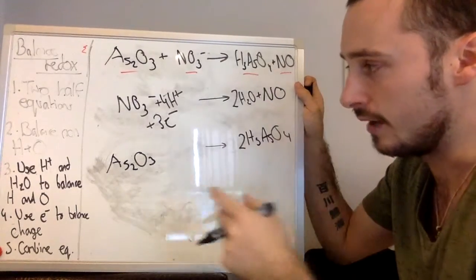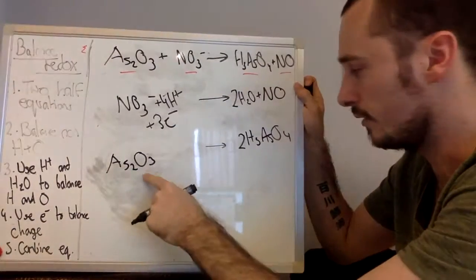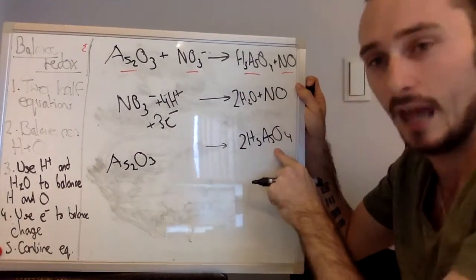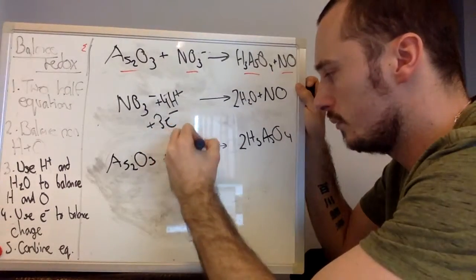Next, we should balance O using H plus and H2O. So on this side, we have three oxygens. On this side, we have eight oxygens, two times four. Therefore, we need to add a total of five water molecules.